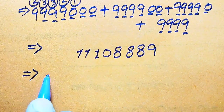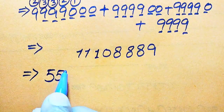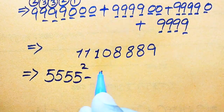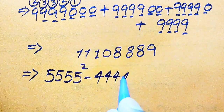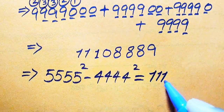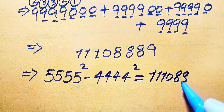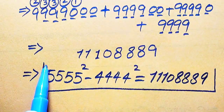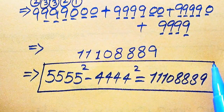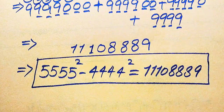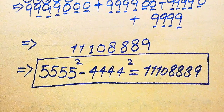So our final answer: 5555 squared minus 4444 squared equals 11,108,889. This is the final simplified form of the given question. Thank you so much for watching this video. Please subscribe to my channel for more exciting videos.